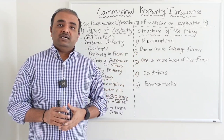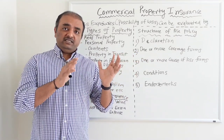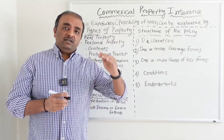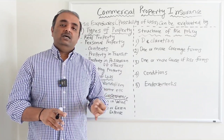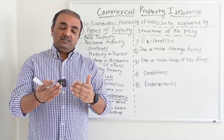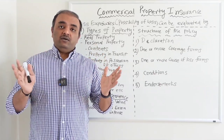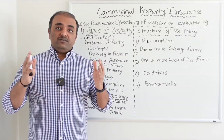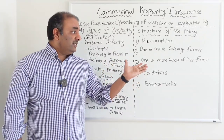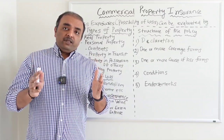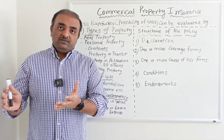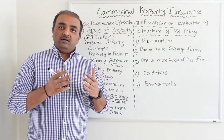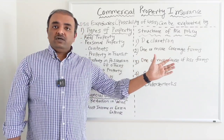There are also one or more cause of loss forms. As mentioned previously, we have basic, broad, and special forms. The basic form covers a listed set of causes of loss like fire and vandalism. Broad includes some additional causes of loss. The special form is a generic open-peril form — everything is covered unless it is excluded. You can specify different cause of loss forms for different coverages; for example, special form for a building but basic form for personal property.